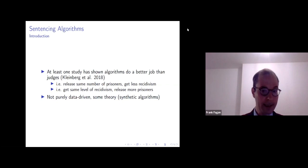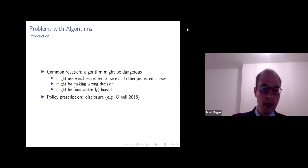But in any case, with their synthetic algorithm, John Kleinberg and his co-authors shown that these algorithms can do a relatively better job than human judges. By better, we mean that you can release the same number of prisoners and get less recidivism, or perhaps get the same level of recidivism by releasing more prisoners. But there's a common reaction in law that there's some problems with these algorithms.